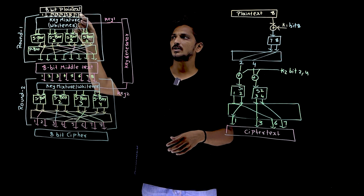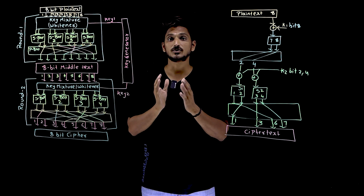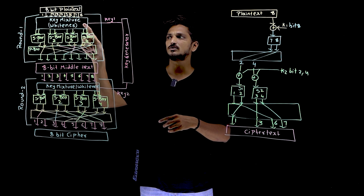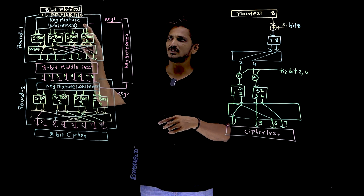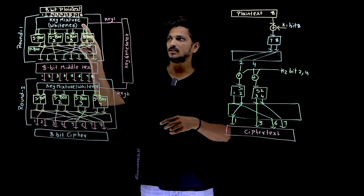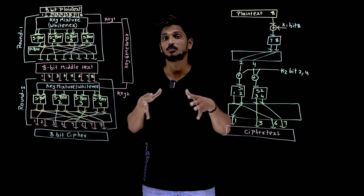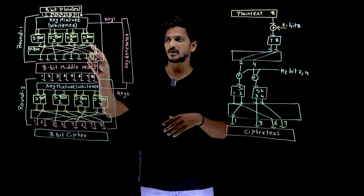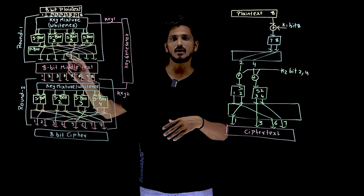If you take this 8th bit in the plain text, this 8th bit goes into the key mixer, where an XOR operation is performed using the key value. The 8th bit in the key value is XORed with the 8th bit in the plain text. Once this value changes based on the key, this 8th bit goes into S-box 4, meaning it is affecting 2 bits in the S-box. These 2 bits — the 7th and 8th bits from the S-box — the 7th is permuted to the 2nd position.